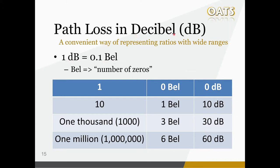You may have heard about decibels before, for example in terms of sound volume, because it is a very common scientific way of representing proportion values with a really large range. In these cases, instead of dealing with the numbers directly, we are more interested in their magnitude, or roughly speaking, the number of zeros in the values. We have some examples in this table. The baseline case, 1, has no zeros, so it's 0 bel and 0 dB. Then 10 has 1 zero, so it's 1 bel, which equals 10 dB. And similarly, 1 thousand is 3 bel and 30 dB, while 1 million is 6 bel and 60 dB.